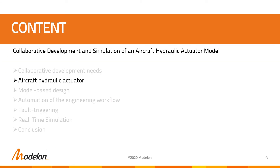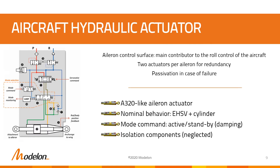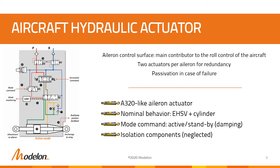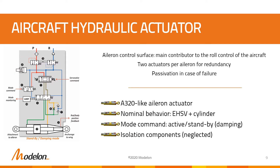We will now illustrate that with the example of a hydraulic actuator development. We selected an Airbus A320-like aileron actuator for this paper. The aileron control surface is the main contributor to the roll control of the aircraft. Each aileron is controlled by two actuators fed by oil from different hydraulic circuits for safety reasons. Only one is active at a time; the other is following, providing some damping.